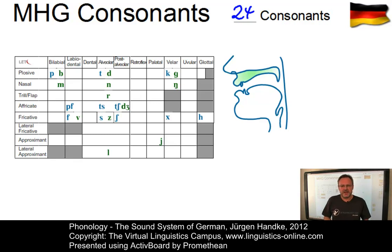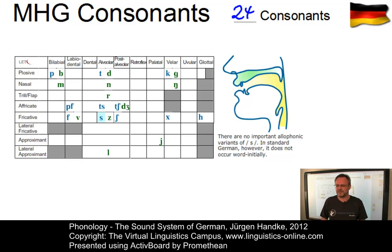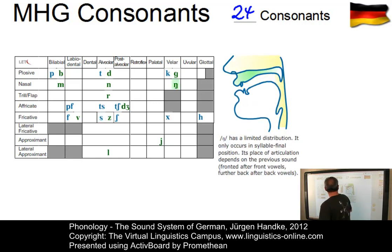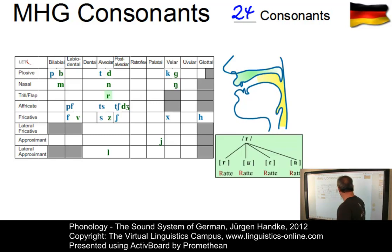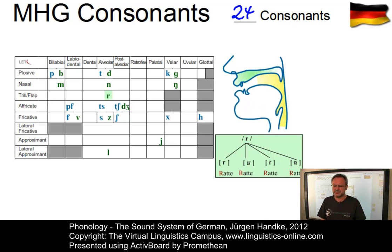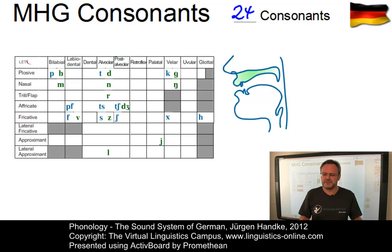Some consonants have a limited distribution as far as their allophones are concerned. For example, the alveolar fricative never occurs word-initially, so words like Symbol come out as Symbol in German — clearly a voiced alveolar fricative. And then there is the velar nasal, which also has a limited distribution: it only occurs at the end of syllables, in the syllable coda. Some consonants involve a high degree of variation, particularly the realization of r in German. A number of phonemes exhibit variants that occur in complementary distribution or are free variants of a particular phoneme.